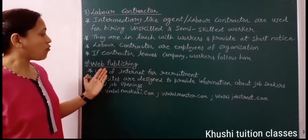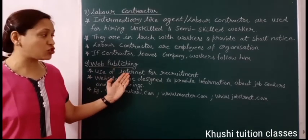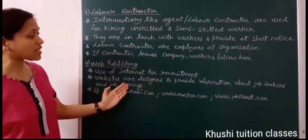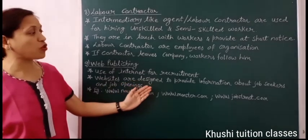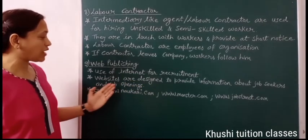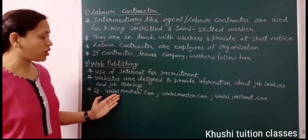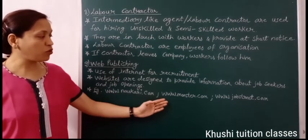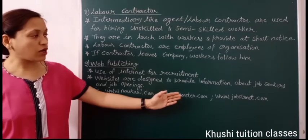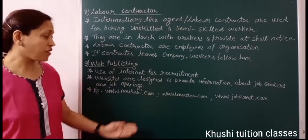The last external source is web publishing — nowadays the internet is used for recruitment. Websites are designed to provide information about job seekers and job openings, for example www.naukri.com, www.monster.com, www.jobstreet.com.